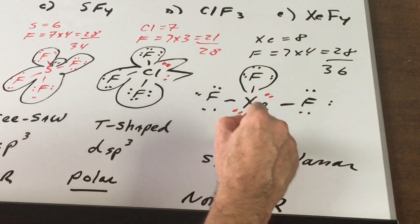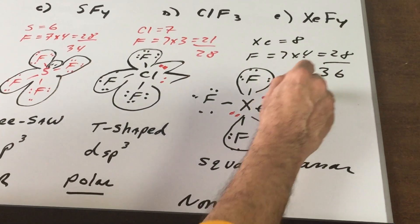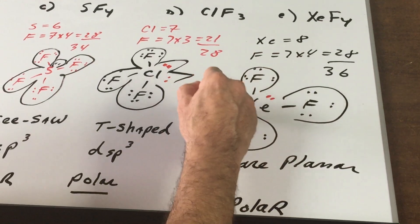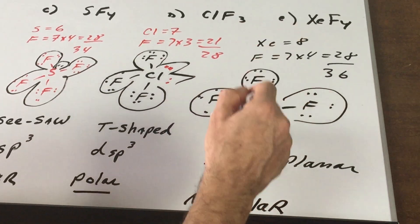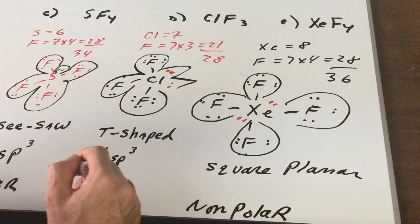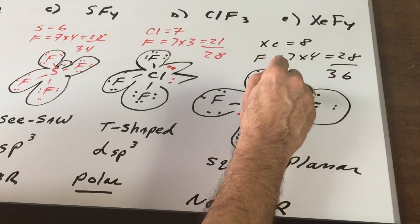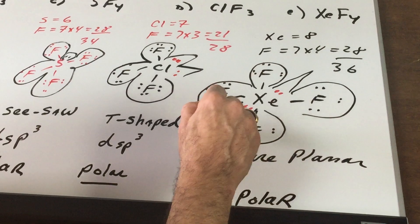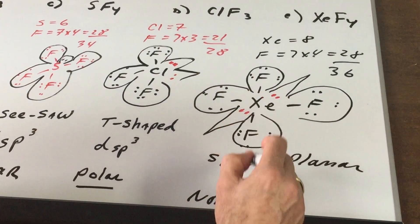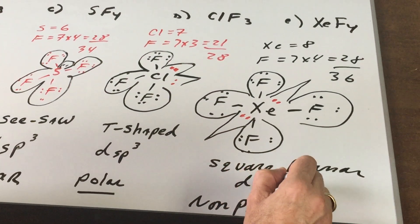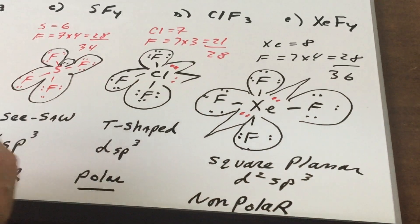And again, how many areas of space to do the hybridization? Two, we have three, four. Alexis, do you think we should count these two or should we leave them out? I think we should count them. That's right. How would you like if we left you out? So we put them in. And as you can see, there's six areas of space, and we get d2sp3.